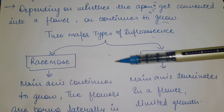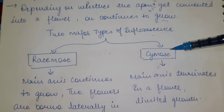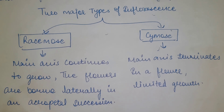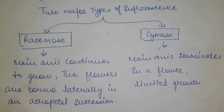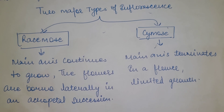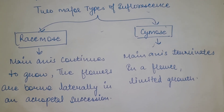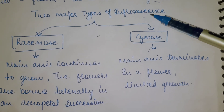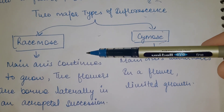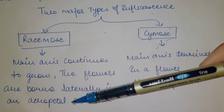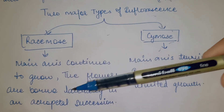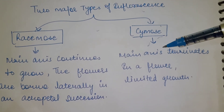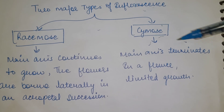In Racemose inflorescence, the main axis continuously grows and the flowers are borne in an acropetal succession — meaning older flowers are at the base and younger flowers are at the top, and the axis keeps growing.